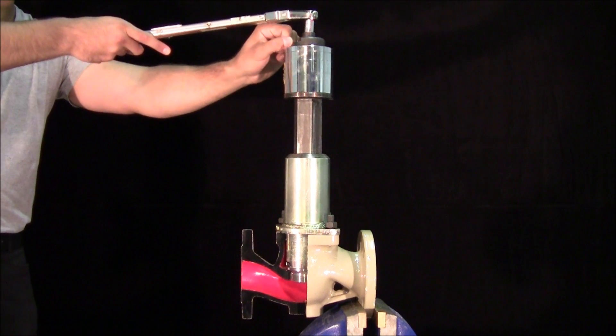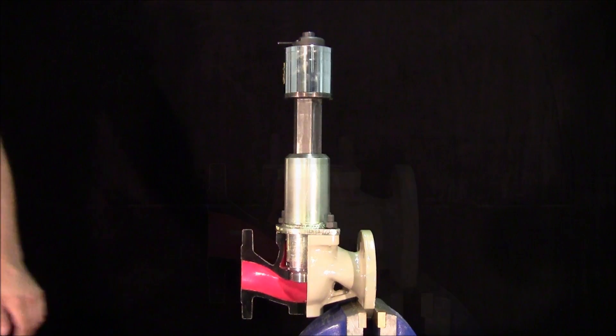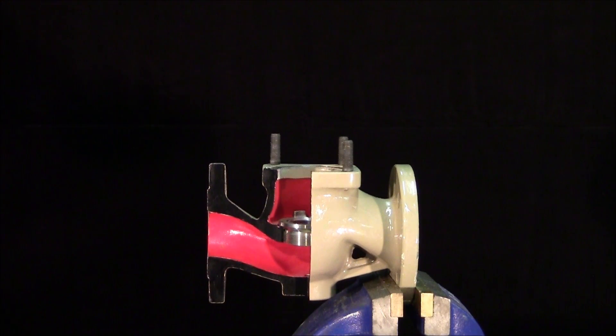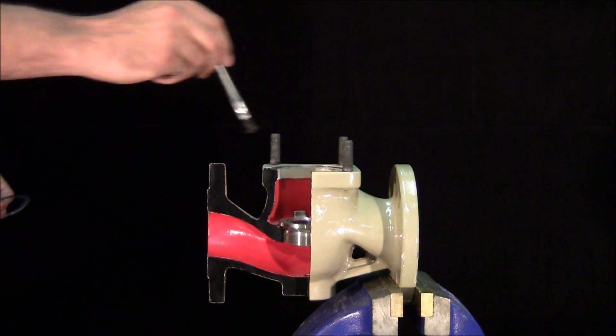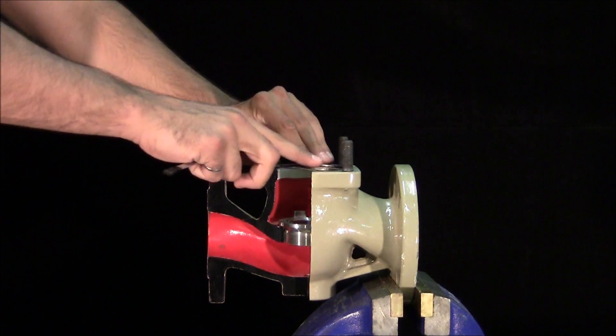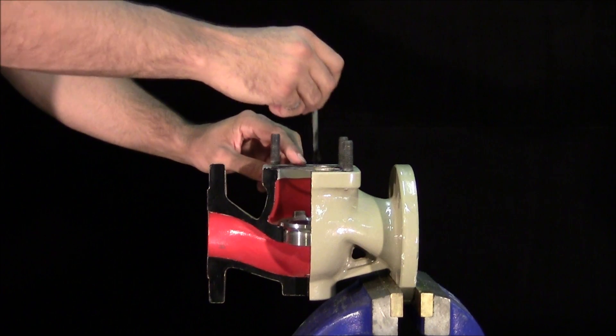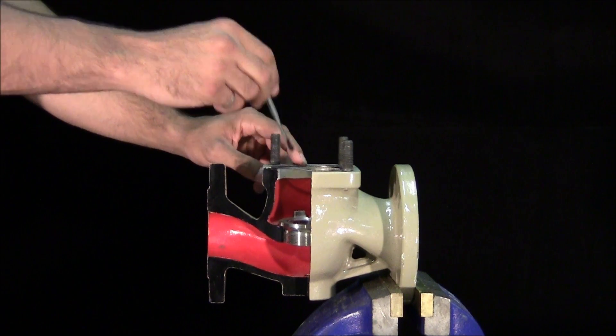The seat is now installed. When installing the body gasket, apply a small amount of grease on both sides to facilitate easy removal during maintenance and repair.